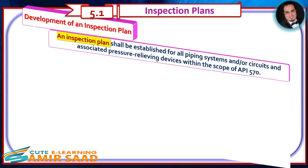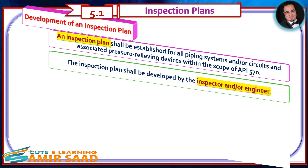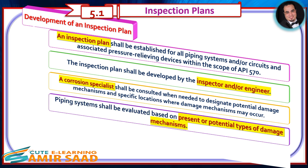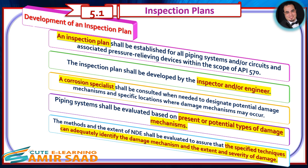Development of an Inspection Plan: An inspection plan shall be established for all piping systems and/or circuits and associated pressure-relieving devices within the scope of API 570. The inspection plan shall be developed by the inspector and/or engineer. A corrosion specialist shall be consulted when needed to designate potential damage mechanisms and specific locations where damage mechanisms may occur. Piping systems shall be evaluated based on present or potential types of damage mechanisms. The methods and extent of NDE shall be evaluated to assure that the specified techniques can adequately identify the damage mechanism and the extent and severity of damage.